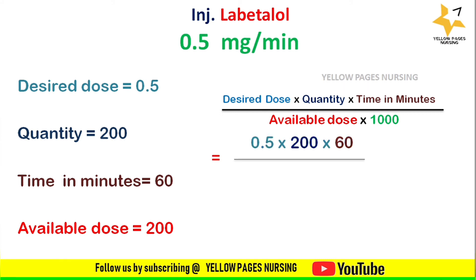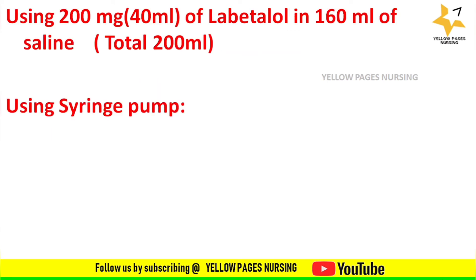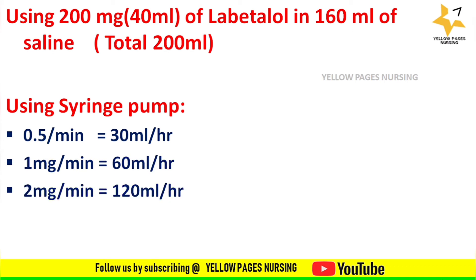Applying all values into the formula, we get the answer 30 ml per hour. With the same ratio of dilution: 0.5 milligram per minute = 30 ml per hour, 1 milligram per minute = 60 ml per hour, and 2 milligram per minute = 120 ml per hour.